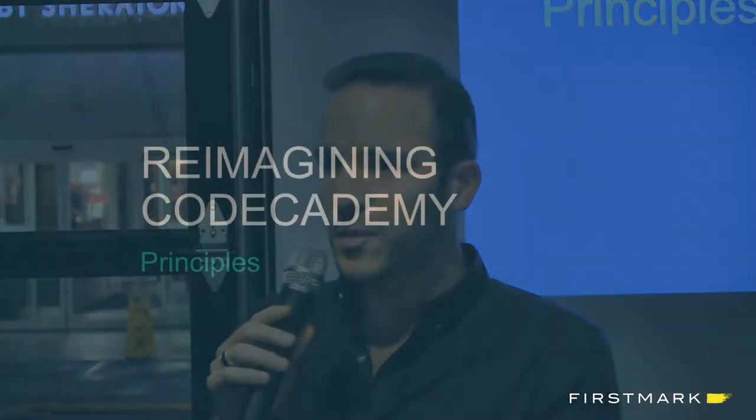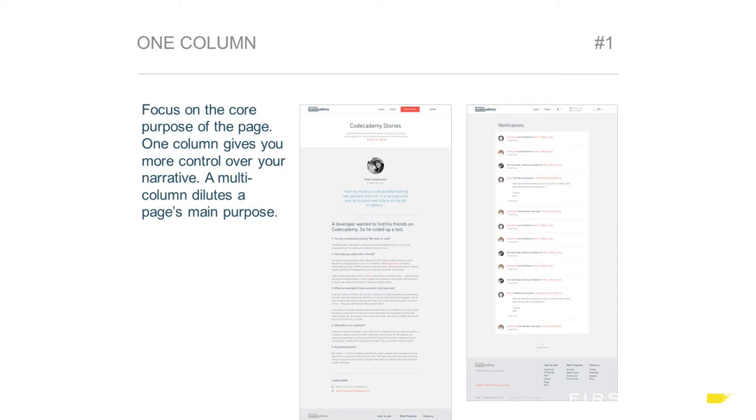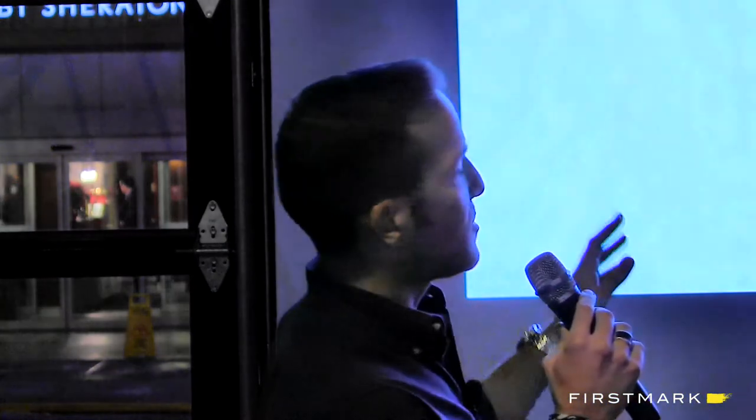I'd like to talk about some of the principles. Some people might think design is arbitrary or subjective — I'm solidly against that view. These are the principles that helped guide us through the process of redesigning our entire product. I'm going to cover 10 quick principles. The first is this idea of one column. We tried as much as possible to keep almost every page to a single column, which helps you focus on the core purpose of that page. One column also gives you a lot more control over the narrative — the very opposite of what you'd see on Chinese websites.